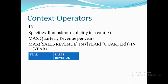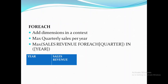So first we'll start with IN. The IN operator explicitly specifies the dimensions in a context. For example, if I have a block with Year and Sales Revenue, and I want to calculate maximum quarterly revenue per year, I can define it as maximum sales revenue IN (Year, Quarter). So whatever dimensions you want, you have to specify them explicitly under the IN clause — it does not consider the dimensions of the block by default.